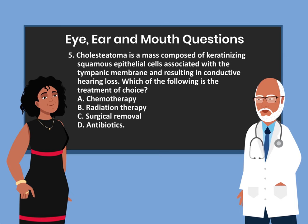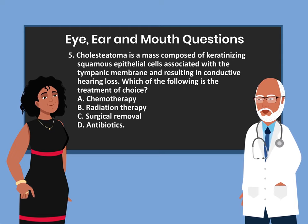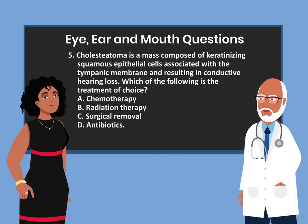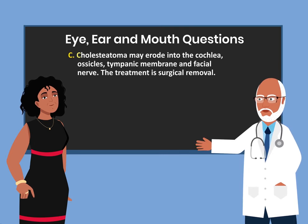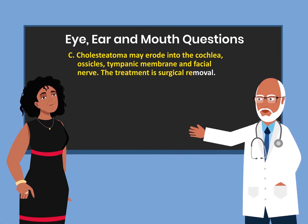Question 5. Cholesteatoma is a mass composed of keratinizing squamous epithelial cells associated with the tympanic membrane and resulting in conductive hearing loss. Which of the following is the treatment of choice? A. Chemotherapy. B. Radiation therapy. C. Surgical removal. D. Antibiotics. The answer is C. Cholesteatoma may erode into the ossicles, tympanic membrane, and facial nerve. The treatment is surgical removal.